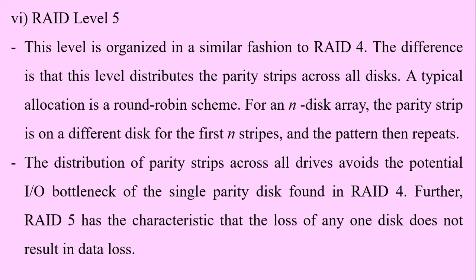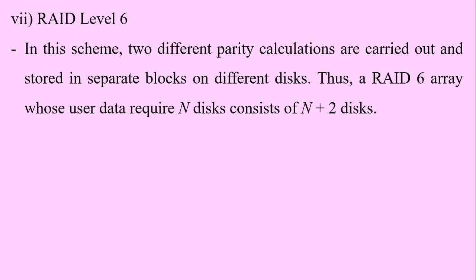Furthermore, RAID level 5 has the characteristic that the loss of any one disk does not result in data loss. In RAID level 6, two different parity calculations are carried out and stored in separate blocks on different disks. Therefore, a RAID level 6 array whose user data requires N disks consists of N plus two disks.